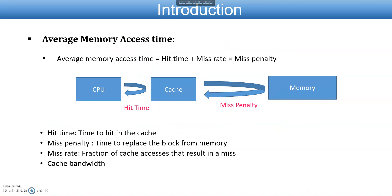The basic 6 optimization techniques proposed earlier are focused on reducing the hit time, miss rate, and miss penalty, because the memory access time depends on 3 factors. MAT is calculated as hit time plus miss rate into miss penalty, where hit time is the time to hit in the cache, miss penalty is the time to replace the block from memory, and miss rate is the fraction of cache accesses that results in a miss. Additionally, cache bandwidth is also considered to improve the cache performance.